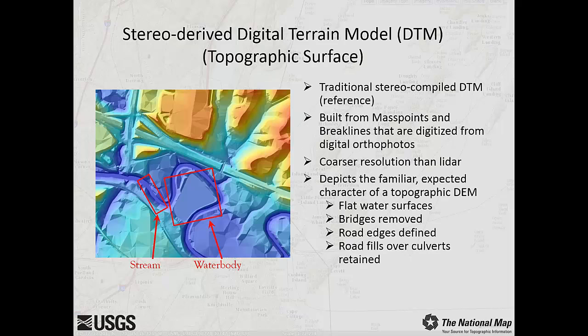Traditionally, Digital Terrain Models, or DTMs, are the output from stereo compilation of vector mass points and brake lines from digital orthophotos. DTMs are of a coarser resolution than DEMs from LiDAR. They visually depict the characteristics of a topographic DEM, including flat water surfaces, removal of bridges, defined road edges, and retention of road fills over drainage culverts.